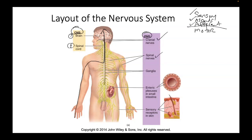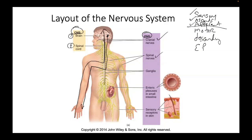After the brain processes that information, the information can go down the spinal cord to the muscles and say: withdraw from that painful stimulus. So that's motor information. Since that information is going down, we say that's descending information, or efferent information. So sensory/ascending/afferent are all related to one another, and motor/descending/efferent are all related to one another.